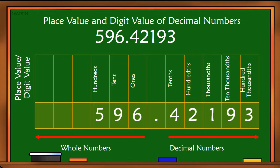Let's look at the digit value. Number 6 is 6. 9 is 90. 5 is 500.